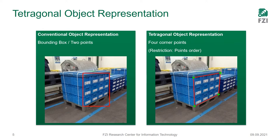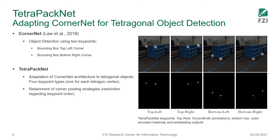To design an object detection model performing tetragonal shaped object detection, we started off with CornerNet, a framework you might be familiar with. CornerNet performs bounding box-based object detection by finding two key points, namely the top-left and bottom-right bounding box corners of each object. We increased the number of key points for each object by an additional two, to find the four corner locations for our object right away. That is indicated in the images on the right side of this slide — in the top row you can see the ground truth locations for an example image showing the four corners: top-left, top-right, bottom-left, and bottom-right, indicated for each transport unit side.